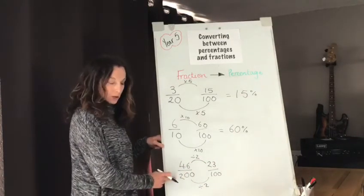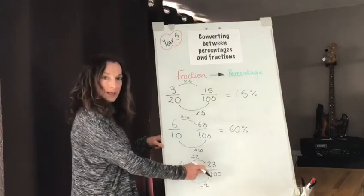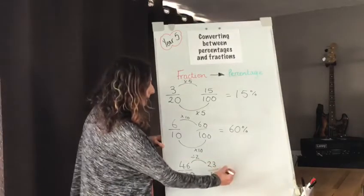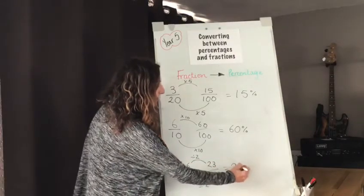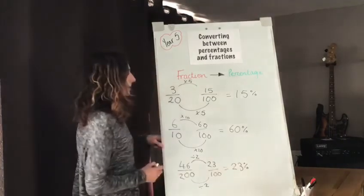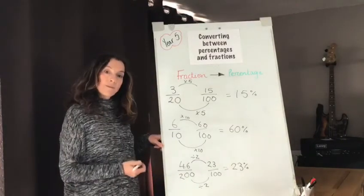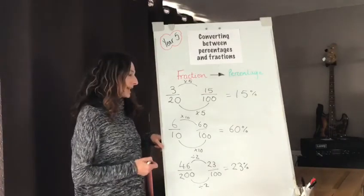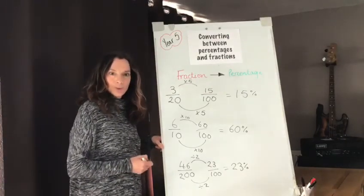So 46 two-hundredths is the same as 23 hundredths which makes it 23%. So that was a reminder of how to convert between fractions and percentages. Good luck with this week's work.